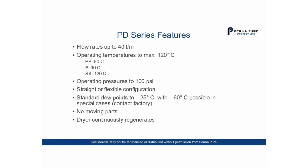Some of the features of the product line: we have flow rates up to 40 liters per minute. Operating temperatures have a maximum of 120 degrees C, depending on the materials specified. The polypropylene versions are good to 80 degrees C, the fluorocarbon versions to 90 degrees C, and the stainless steel versions up to 120 degrees C. We also select these materials based on the corrosion resistance requirement from the sample gas composition.